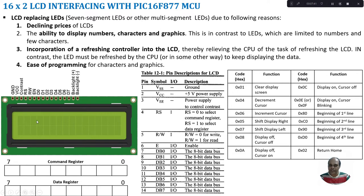Each position in the LCD has an address. For a 16x2 LCD, the beginning of the first line starts at 0x80 and the last position in the first row is 0x8F. The second row first position is 0xC0 and last position is 0xCF. For a 16x4 LCD, the third row starts with 0x90 and the fourth row starts with 0xD0. 0x02 is for home.